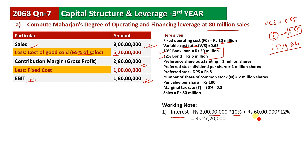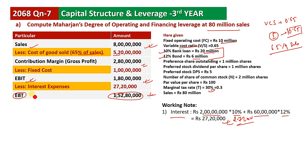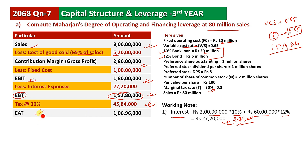Interest equals 20 million at 10% plus 6 million at 12%, which gives total interest of 2.72 million. EBT is 30% tax on earning before tax. So 15.28 million with 30% tax gives tax of 4.584 million. Earning after tax is 10.696 million.